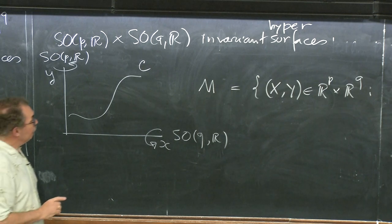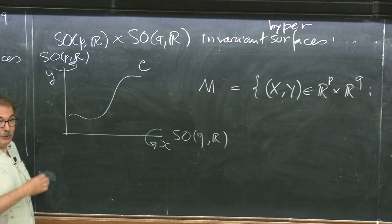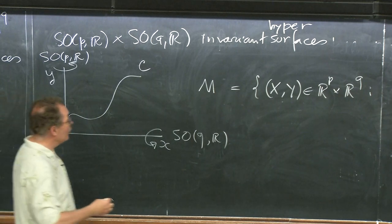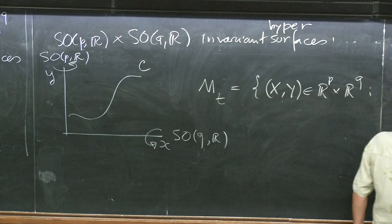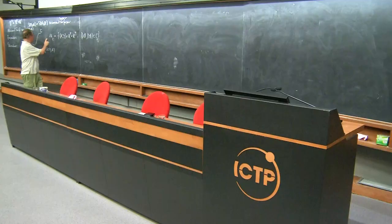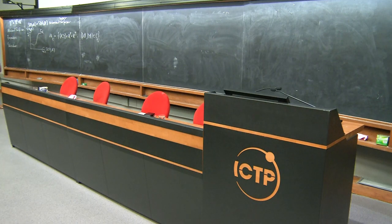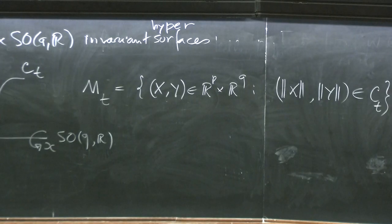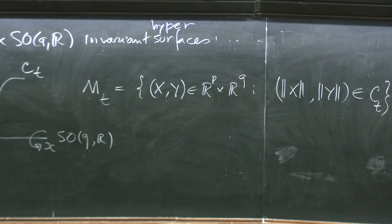If you consider mean curvature flow, you consider the evolving surfaces. If you have a family of these things, you can let the surface evolve by letting the curve evolve. You can ask what condition you have to impose on C for this to be mean curvature flow, for M to undergo mean curvature flow.